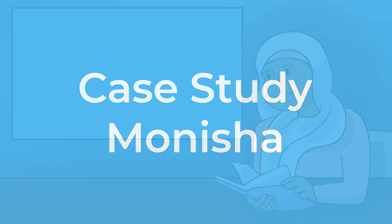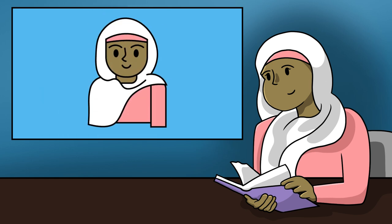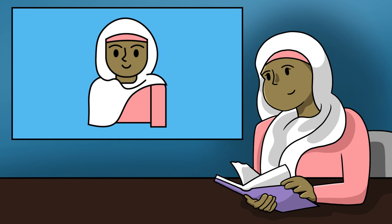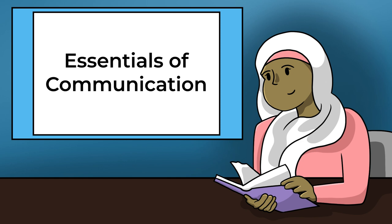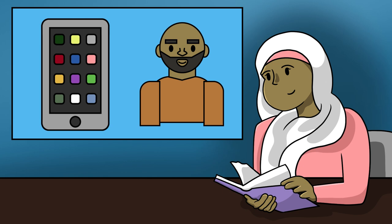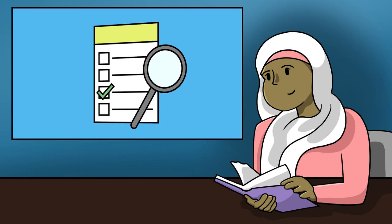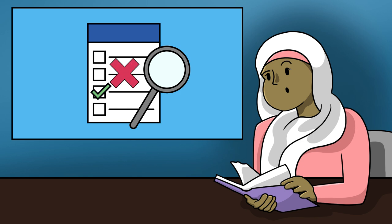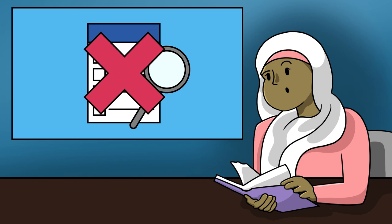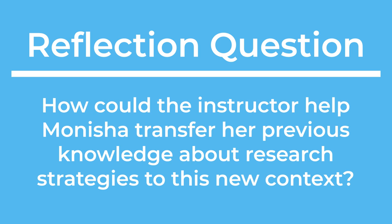Case study: Monisha. While her program hasn't been research intensive, the course reading from her first semester has helped Monisha feel more comfortable with this course from the field. She also had an opportunity last semester to conduct research in the Essentials of Communication course, with her topic being about parental controls on social media. She quickly realizes that the research required by the Makeup for Media and Creative Arts program is a little different from what she is used to — she's not sure what types of sources would be considered authoritative in this case or where she could find them. Reflection question: How could the instructor help Monisha transfer her previous knowledge about research strategies to this new context?